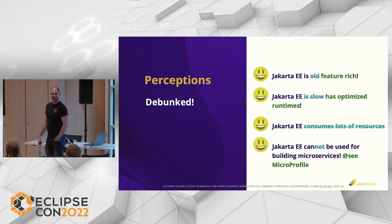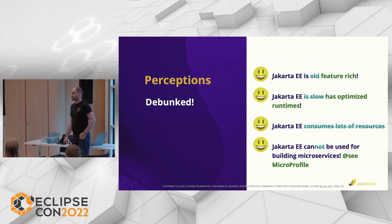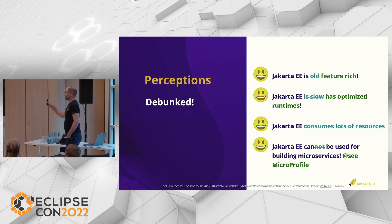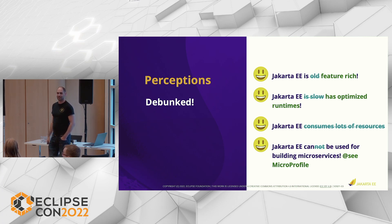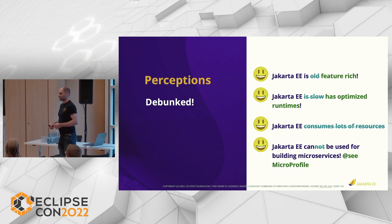Jakarta EE being old means it's feature-rich. Everything you need to build enterprise applications — database transactions, WebSockets, and more — is in it as a specification. If you miss something, it's open source, so go ahead and submit a proposal. Innovation has been mostly in implementations: the application servers you knew from the past are no longer what we have today. They are runtime, memory, and CPU optimized, thanks to healthy competition between vendors implementing Jakarta EE and MicroProfile.